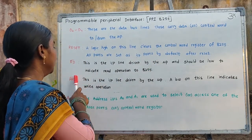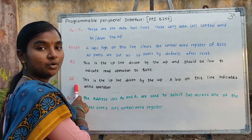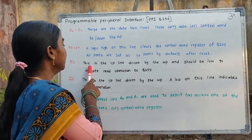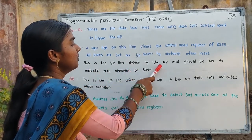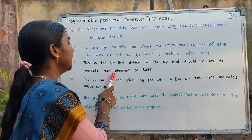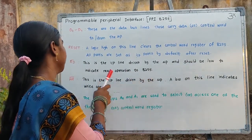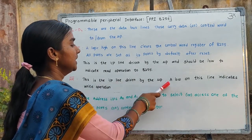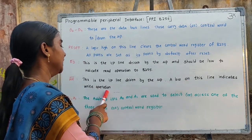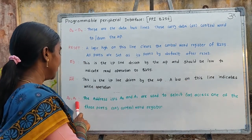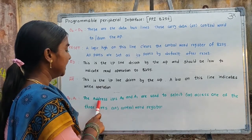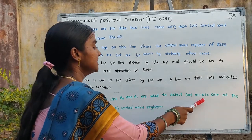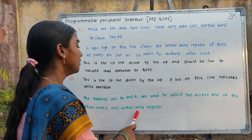There is also a read pin and a write pin. These two pins are active low pins. The read pin is an input line driven by the microprocessor and should be low to indicate a read operation to the 8255. By using the write pin, this is also an input line driven by the microprocessor, and a low on this line indicates a write operation. A0 and A1 are the address lines used to select or access one of the three ports or the control word register.